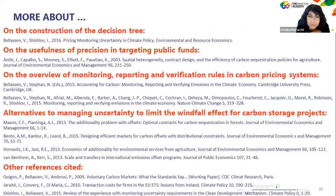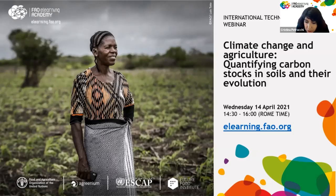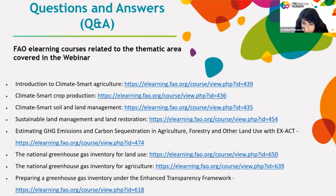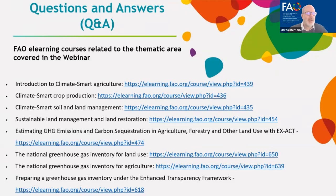Thank you very much Valentin — a very technical presentation. Martial, the floor is yours to respond to some questions. There was a question about what NDC means: NDC stands for Nationally Determined Contribution — in French, 'contribution déterminée au niveau national.' This is a commitment from countries on what they can do in terms of mitigation and adaptation under the umbrella of the Paris Agreement — what countries are putting on the table to reach the goal of 2 degrees C. I provided links in the chat where you can find a repository of all NDCs.